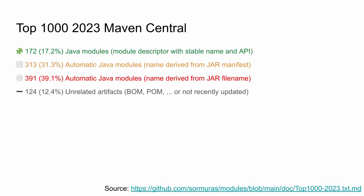A little bit of stats, courtesy of Christian Stein. He pulled information from Maven Central — the top 1,000 most downloaded artifacts. Among them, 17.2% are real modules with a proper module-info file, stable name, and APIs. 31% define at least the module name so you can rely on them. Everything else is not ready. Roughly 40% of the ecosystem is module-ready. What do we do with the other 60%? We'll get to that.